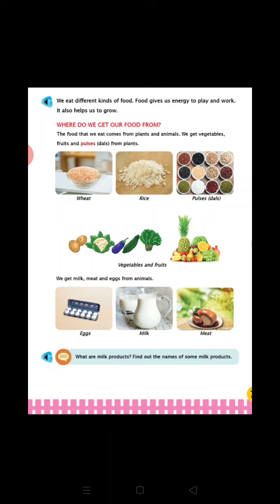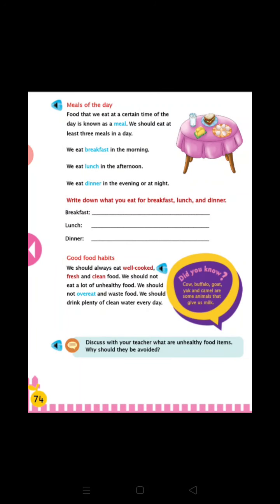Now students, where do we get our food from? We get fruits, vegetables, and pulses from plants. We get milk, egg, and meat from animals. Now students, what are milk products? The products which are made from milk are called milk products.